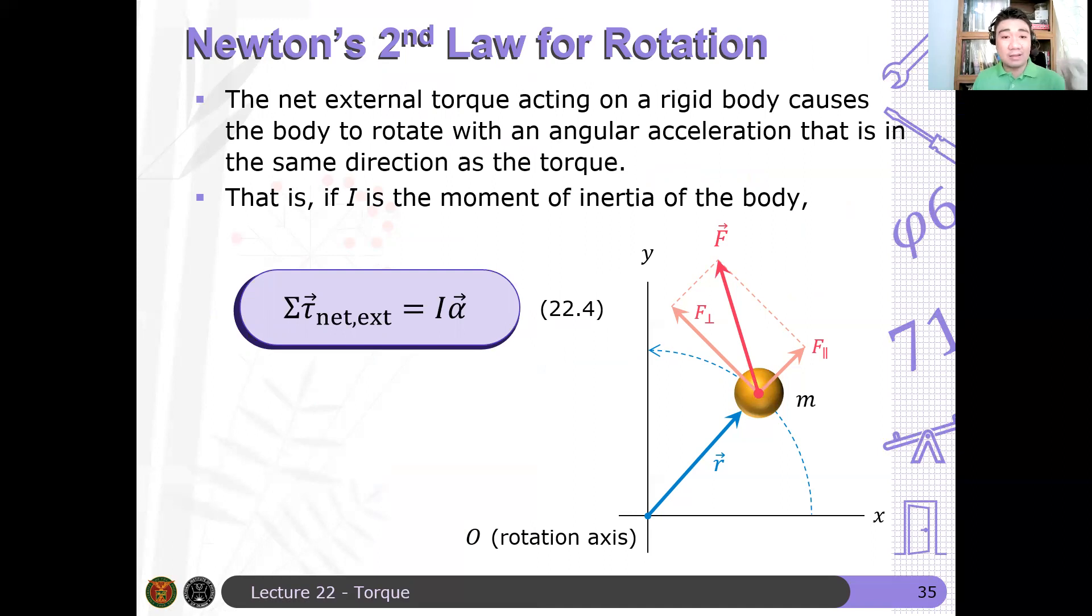But again, we are talking of the net external torque acting on a body. Ngayon, of course, medyo skeptic ka ganito sa sabihin mo. Eh, sir, di ba particle lang naman yung hinanapan natin? At the kataon lang na mayroong moment of inertia yung isang particle relative to a certain axis. Bakit siya pwede i-generalize to a rigid body?